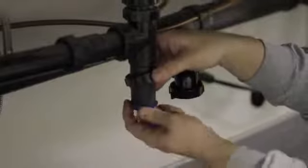Go ahead and reinstall the washer on the waste arm and then on the pipe coming from the sink.